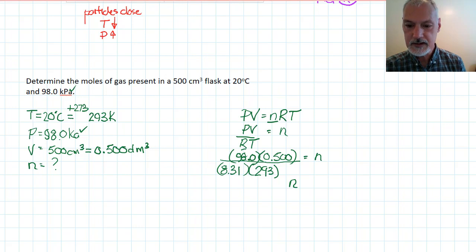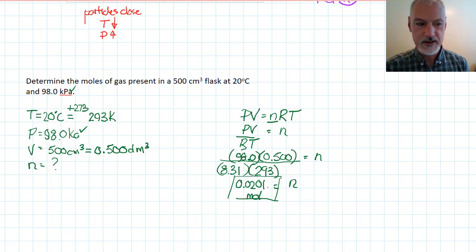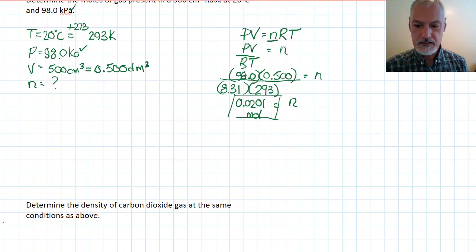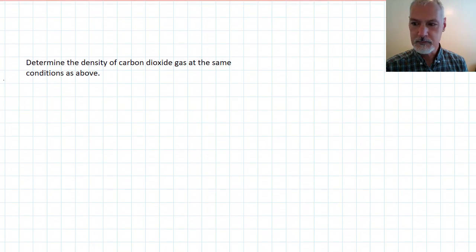Three significant digits in the data that I've got here. And that's going to finish up with 0.0201 moles. So, that would be the amount of gas that I would have in the container. Let's look at a second, a little bit more involved problem.